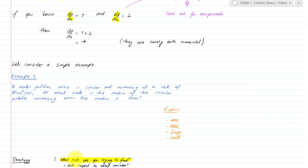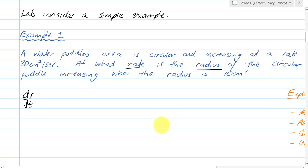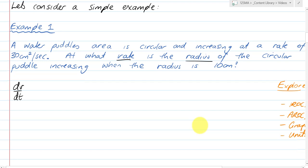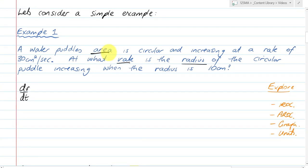So I'm asked for at what rate is the radius increasing - that's going to be dr/dt. That's what I'm trying to find. I'm told that the area is increasing at a rate of 30, so therefore I know that da/dt equals 30.